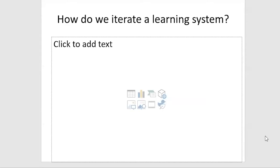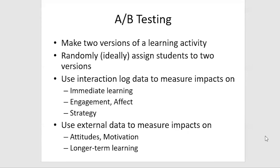So how do we iterate a learning system? Let's say we have a learning system — we know it's good, or maybe just okay — and we want to make it better. One such approach is to use A-B testing, which became prominent in e-commerce before it became prominent in education, although folks like Jack Mostow were doing it 20 years ago.